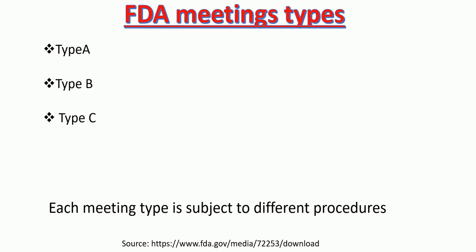What are the different types of FDA meetings? There are basically three types of FDA meetings: Type A, Type B, and Type C. Each meeting type is subject to different procedures.